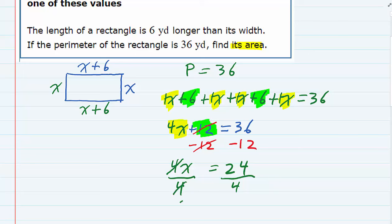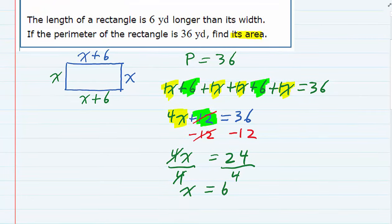And when those 4s cancel, I have the x by itself and a 6 on the other side, 24 divided by 4.